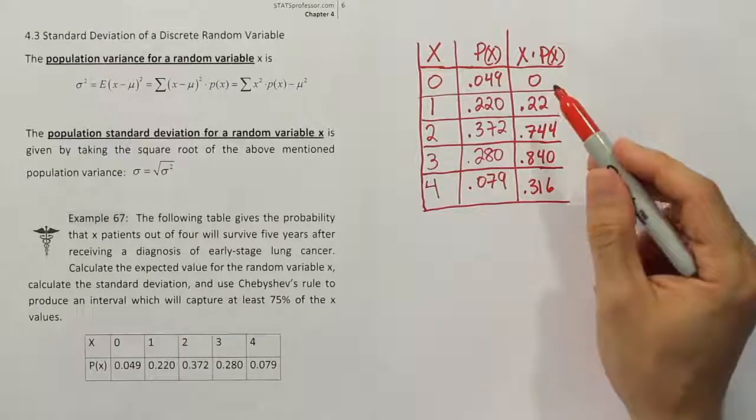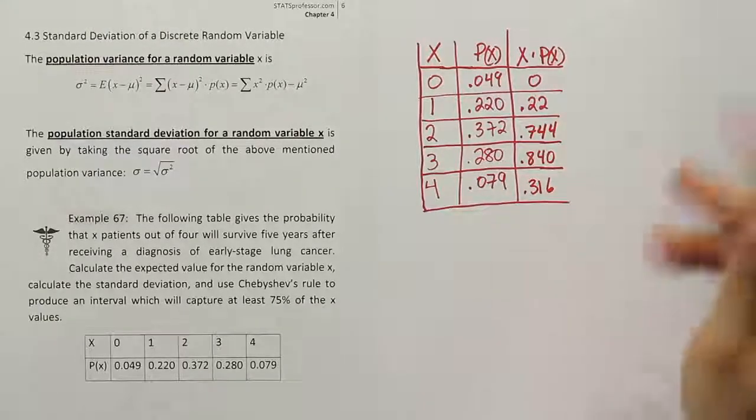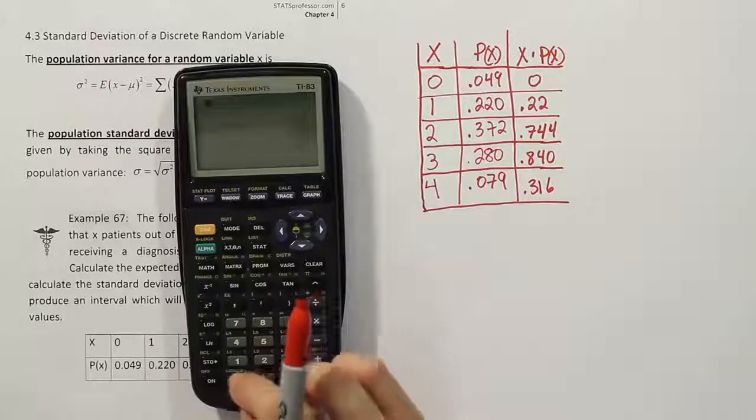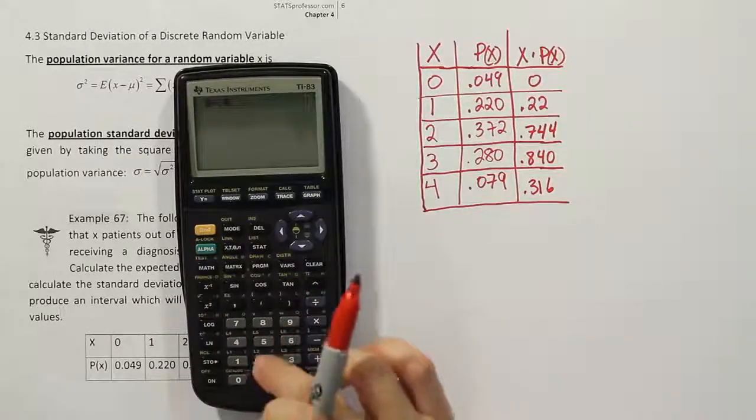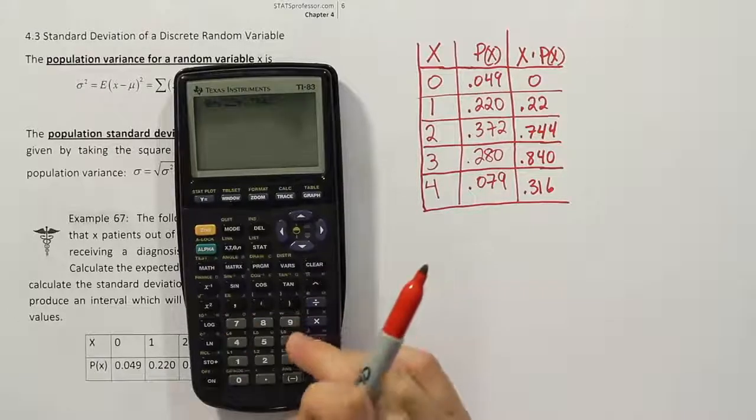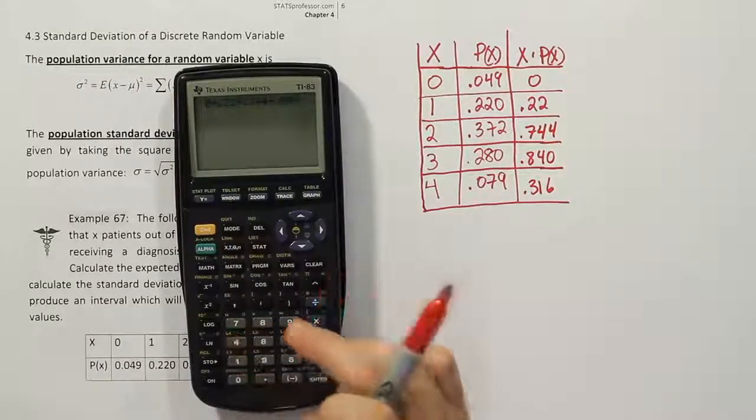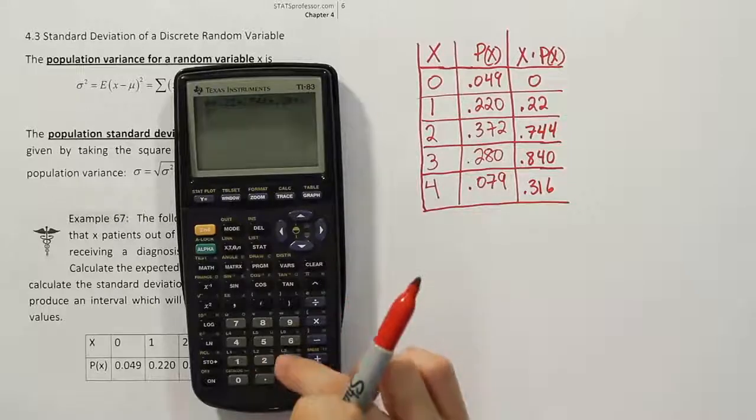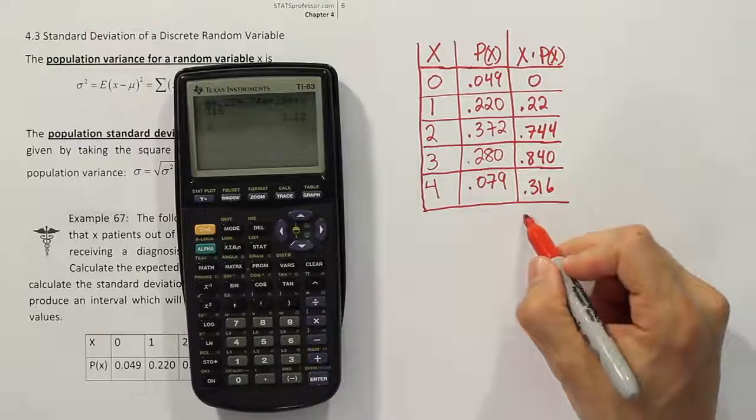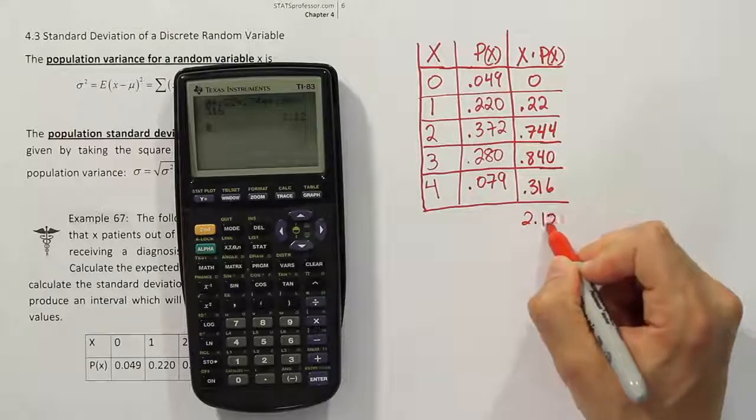Okay, so that's our initial X times P of X multiplication. Now we're just going to sum that up to get our average. So let's do that. We'll have 0 plus 0.22 plus 0.744 plus 0.84 plus 0.316. And when we're done, we get 2.12.